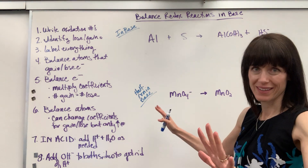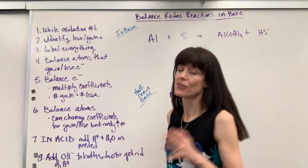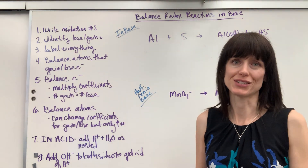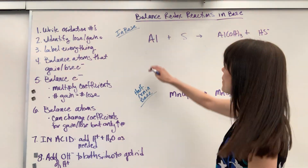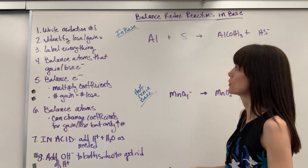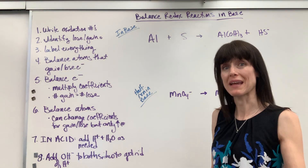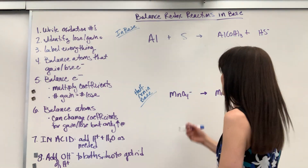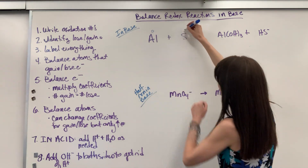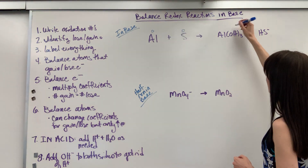Okay, so here we go. Step one: the first thing you do is write down the oxidation numbers. I have this complete redox equation and it says to balance it in base. Let's write down the oxidation numbers. Elements in elemental form are always zero.